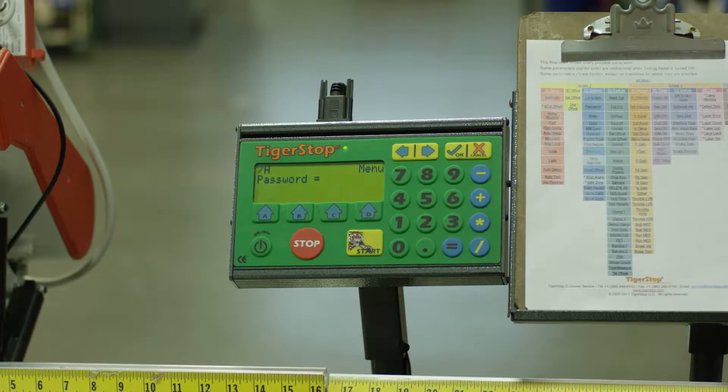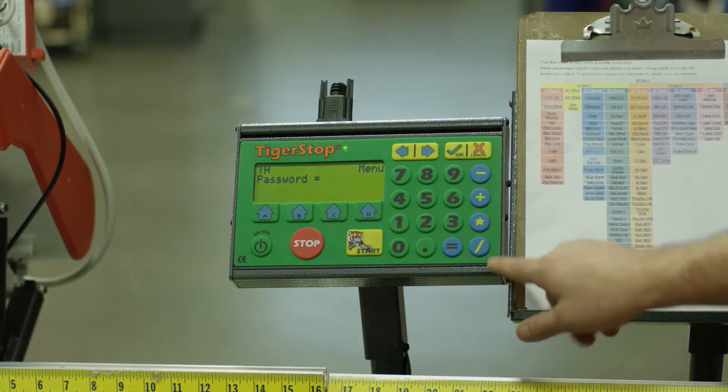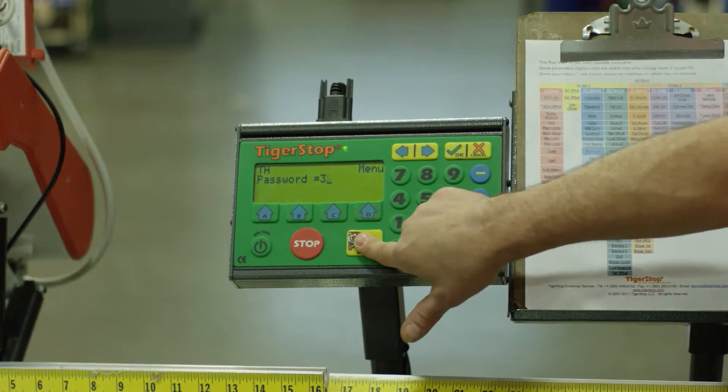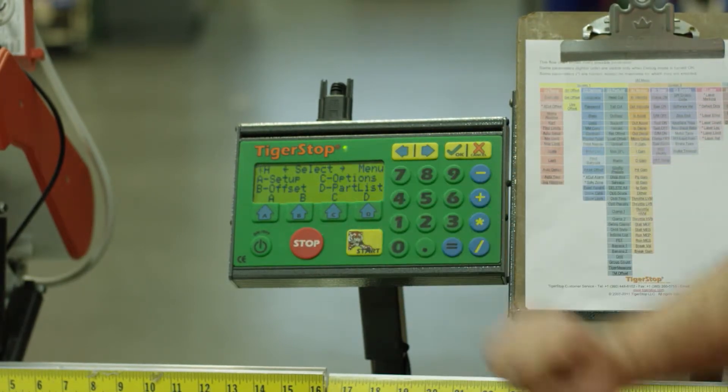Your password is your serial number unless it has been changed. In this video, we're going to use three. I'm going to enter my password, press OK, and now you will see we are on screen one.